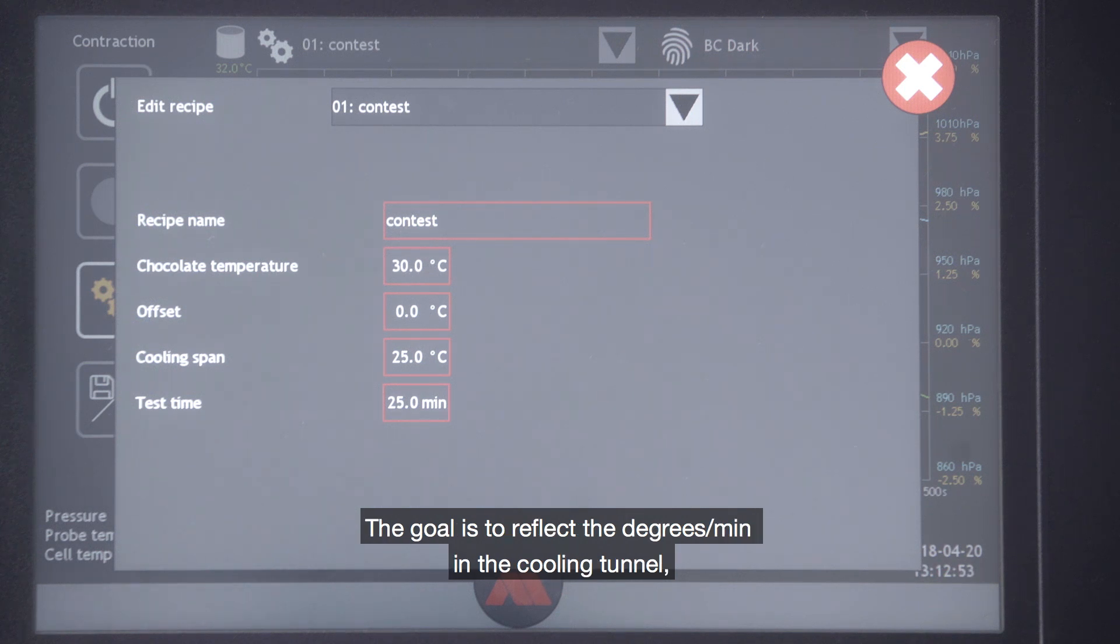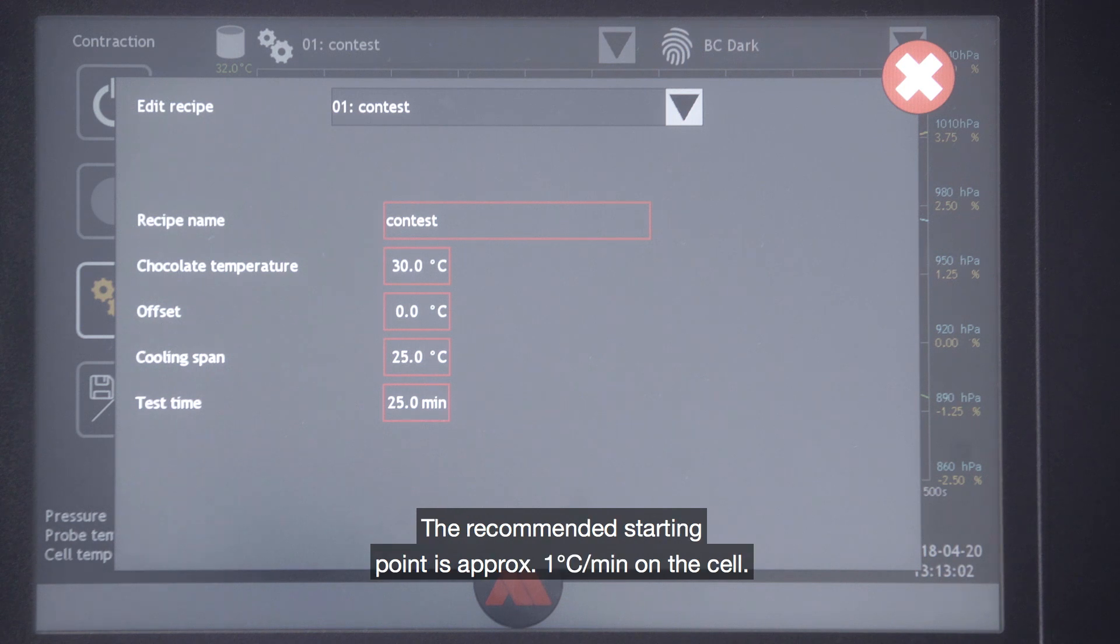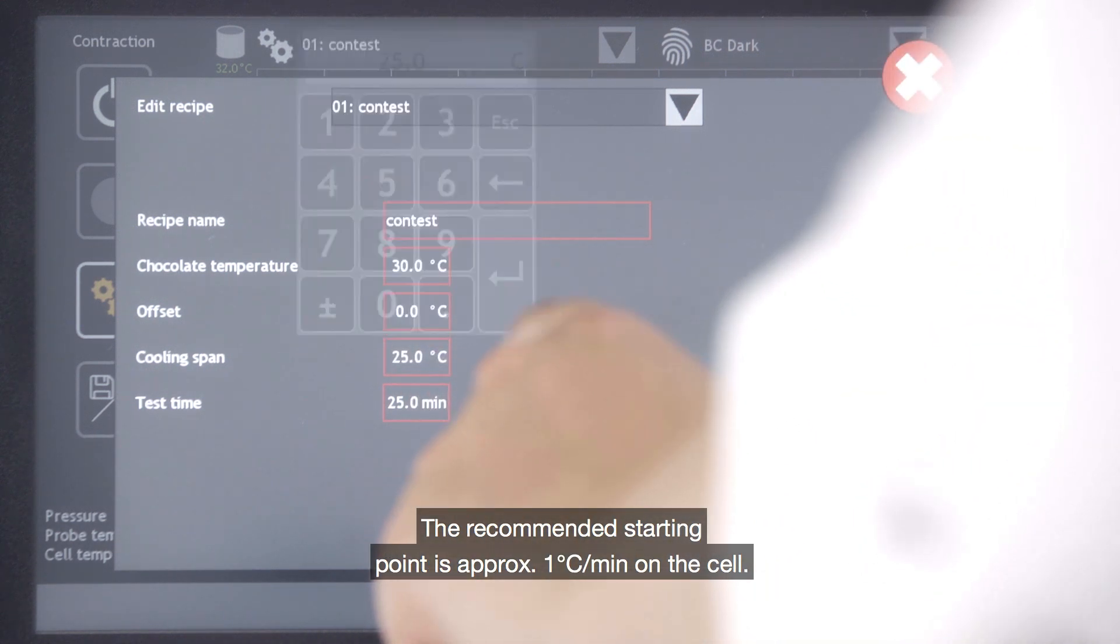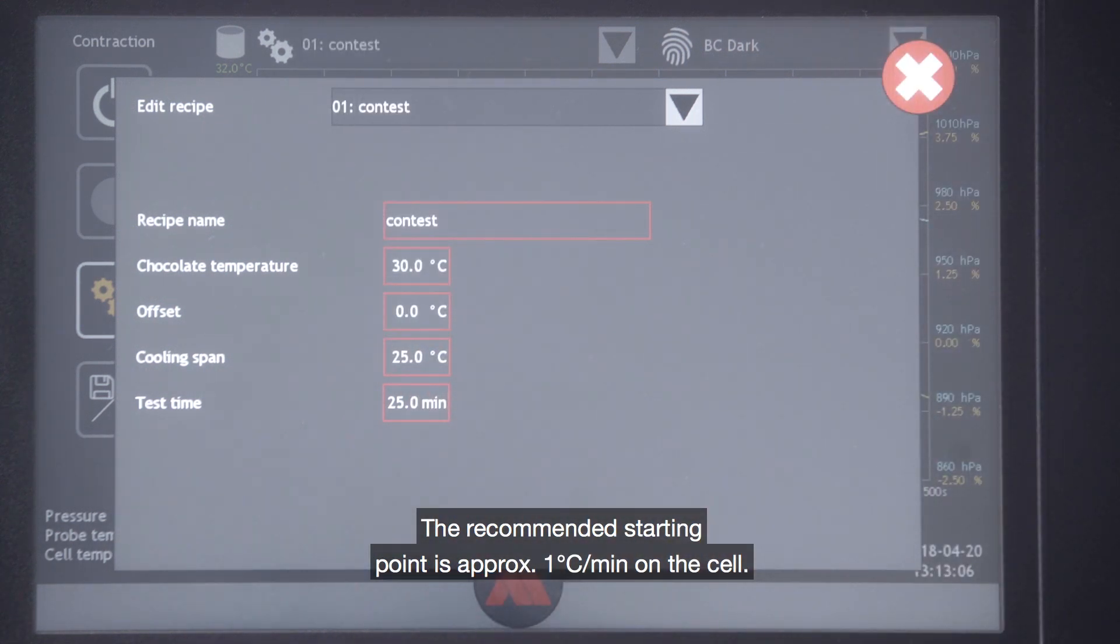The goal is to reflect the degrees per minute in the cooling tunnel and to get the cooling speed to be the same in every test made where the values from the results are to be compared. The recommended starting point is approximately one degree per minute on the cell. This is done by the cooling span and test duration.